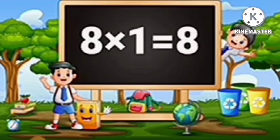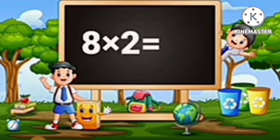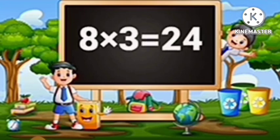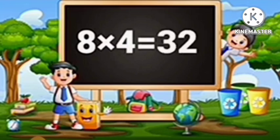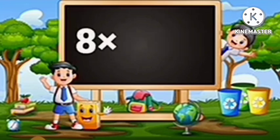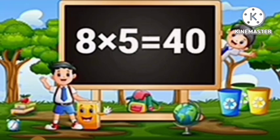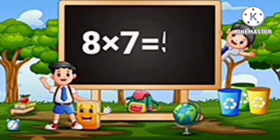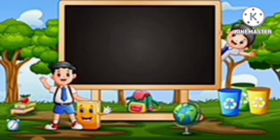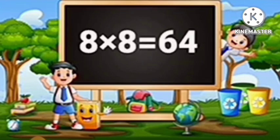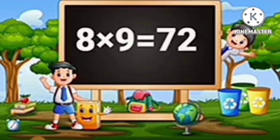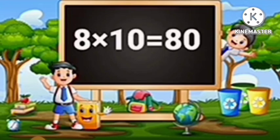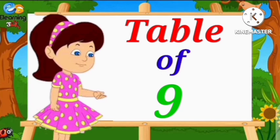Table of Eight. Eight ones are eight. Eight twos are sixteen. Eight threes are twenty-four. Eight fours are thirty-two. Eight fives are forty. Eight sixes are forty-eight. Eight sevens are fifty-six. Eight eights are sixty-four. Eight nines are seventy-two. Eight tens are eighty.